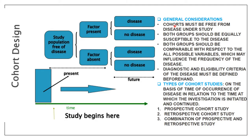General considerations for cohort study: the cohort must be free from the disease; both groups (exposed and non-exposed) should be equally susceptible to the disease; both groups must be comparable with respect to all variables that may influence disease frequency; and the diagnostic and eligibility criteria must be defined beforehand. The three types of cohort study are: prospective (disease not yet occurred), retrospective (disease already occurred), and a combination of both.